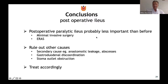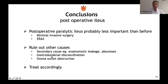In conclusion, postoperative paralytic ileus is probably less important nowadays because we apply minimally invasive surgery and multiple ERAS items focusing on earlier GI recovery. We must always rule out other causes — anastomotic leak, abscess — and discriminate paralytic ileus from gastroduodenal discoordination and stoma outlet obstruction because management is completely different.